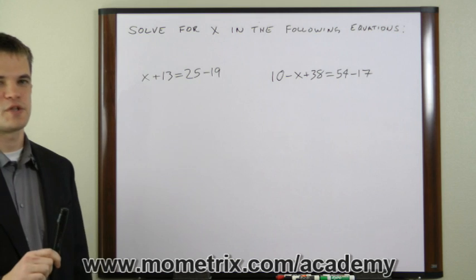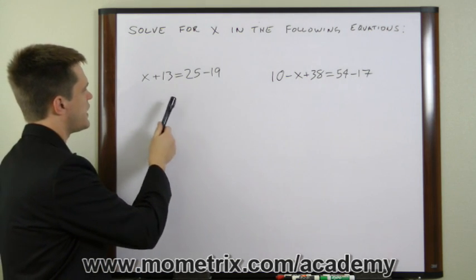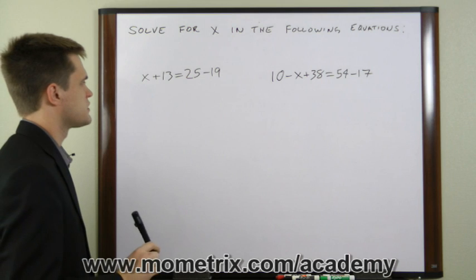Let's look at some examples here. This first one we have x plus 13 equals 25 minus 19.